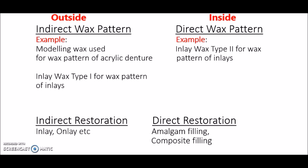Let me now summarize the four terms in the form of this picture. An indirect wax pattern is a wax pattern fabricated outside the mouth, and a direct wax pattern is a wax pattern fabricated inside the oral cavity. An example of an indirect wax pattern would be using modeling wax for making the wax pattern of acrylic dentures — partial denture or complete denture — which is done on a dental cast outside the oral cavity.